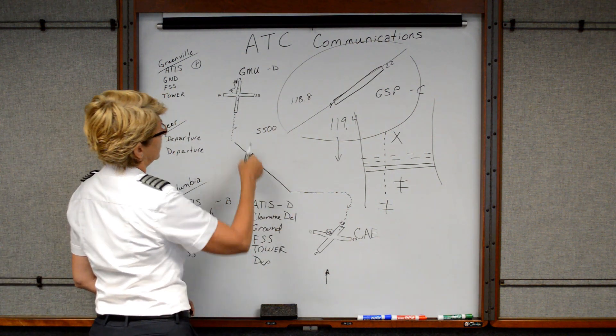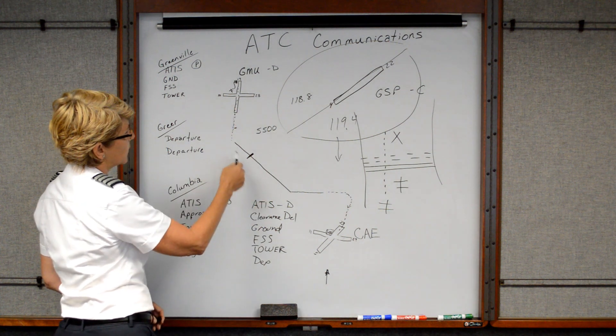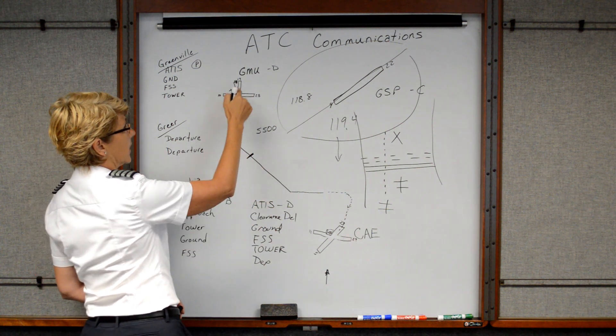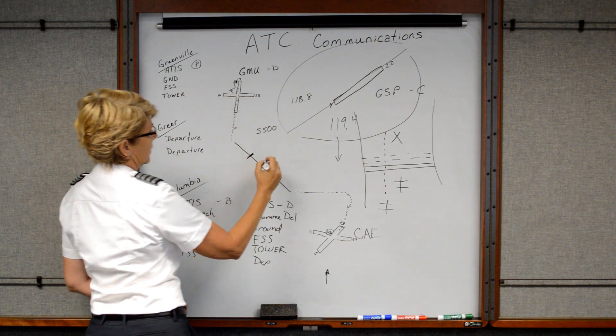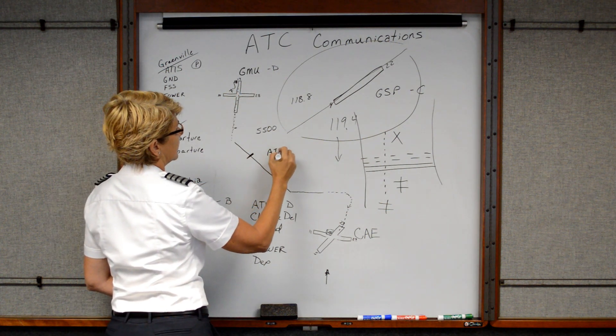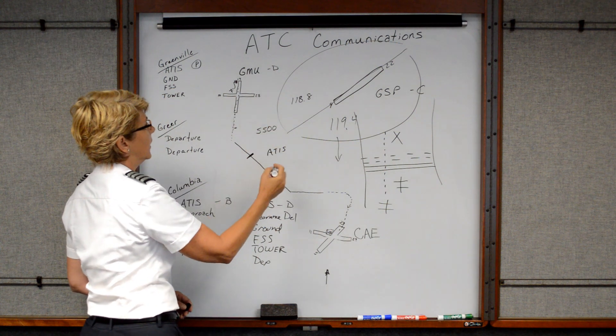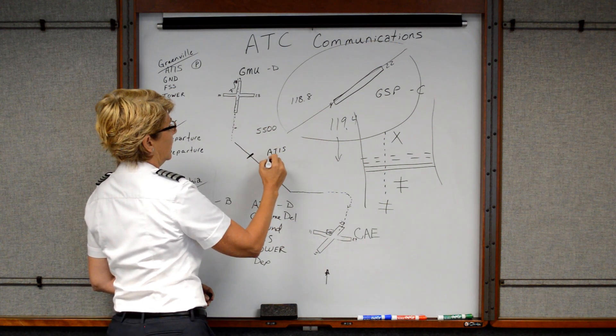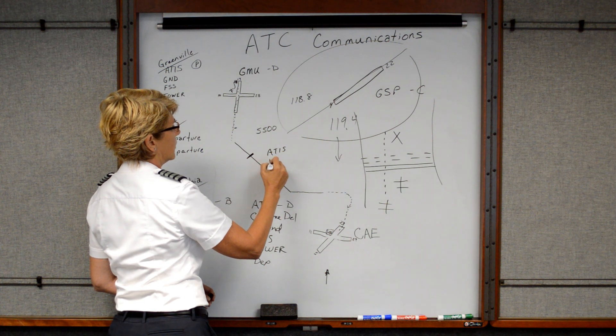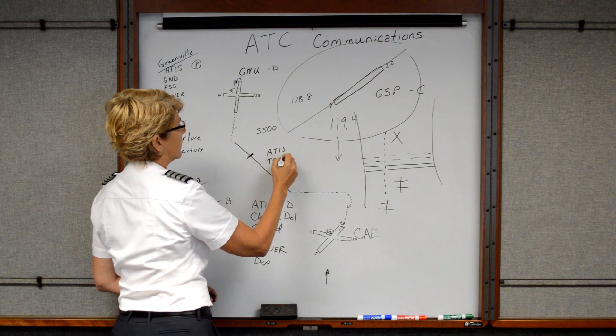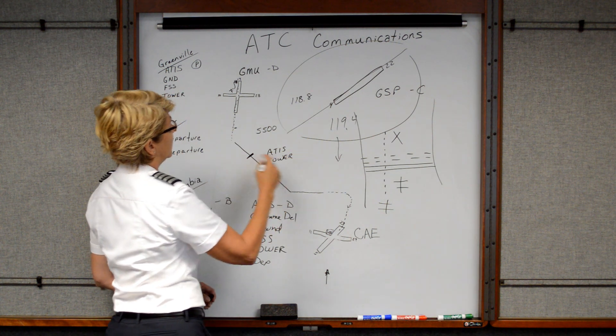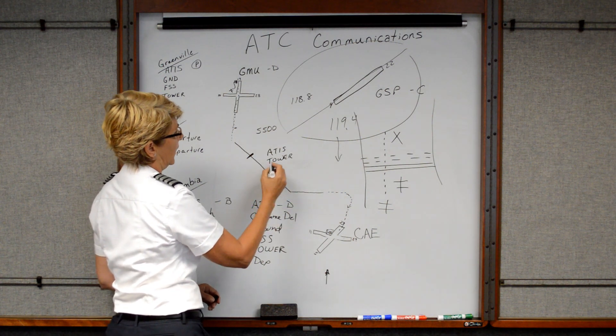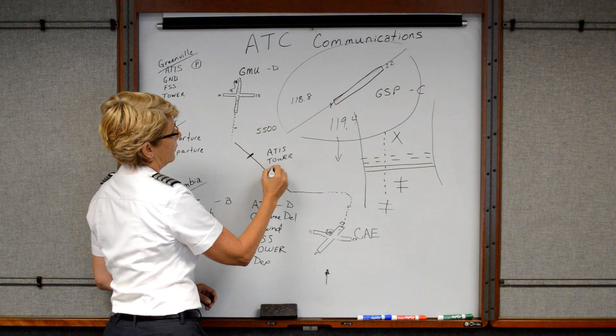Then we'll work our way back to Greenville, and as we're approaching Greenville, then we're going to listen to the ATIS at Greenville downtown first. So we'd listen to the ATIS, so we know what's going on at the field. And then we would be talking to Greer Approach. And then Greer Approach is going to switch us over to Greenville Tower. And then we would land, and after we land and clear the hold short line, then we would talk to Greenville Ground.